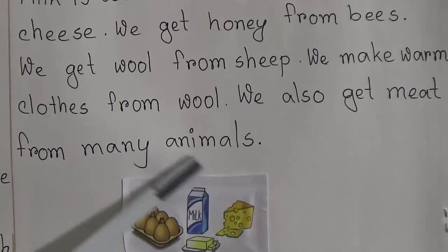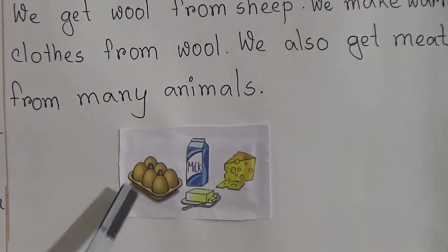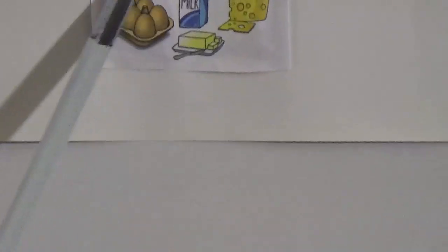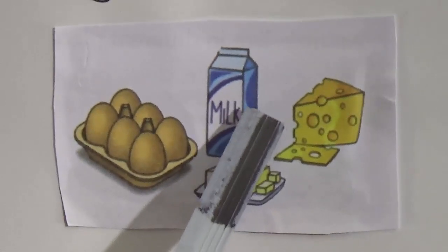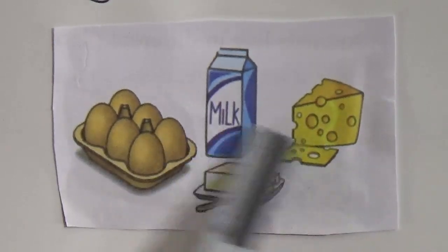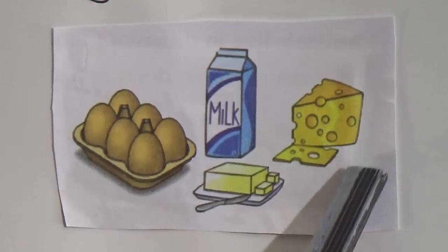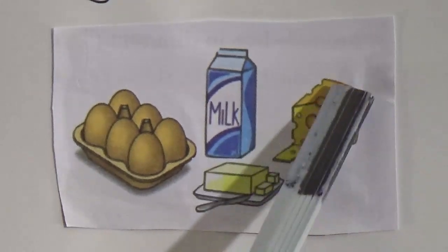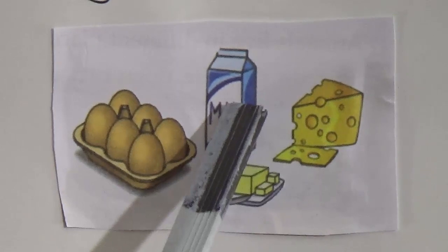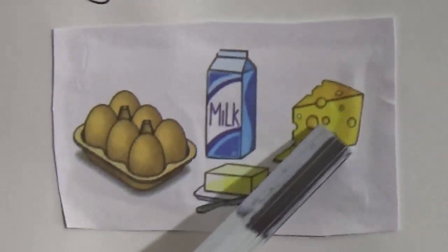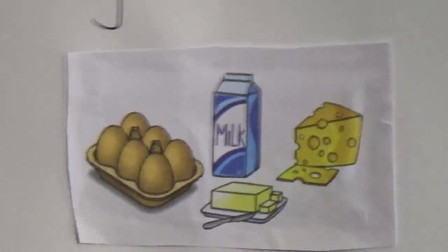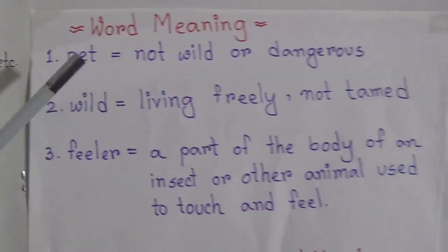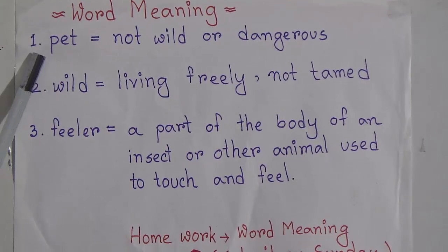Here are some pictures of what we get from animals. This egg we get from hens. Milk we get from goats and cows. From milk, we make cheese and butter. So cheese and butter also come from animals.